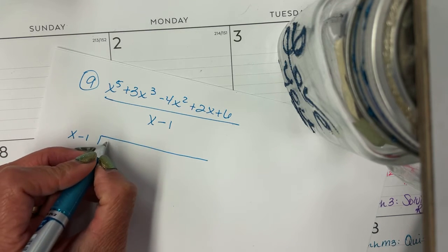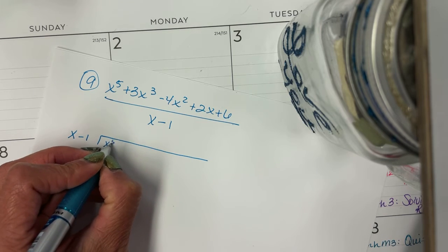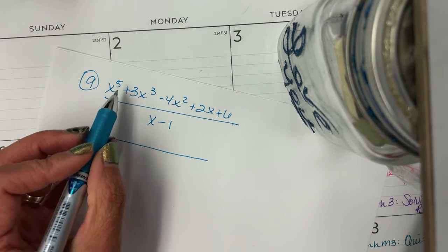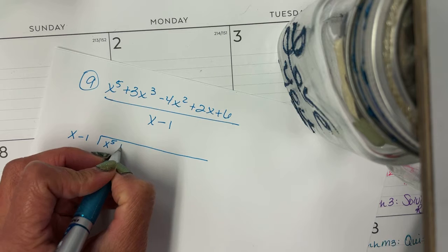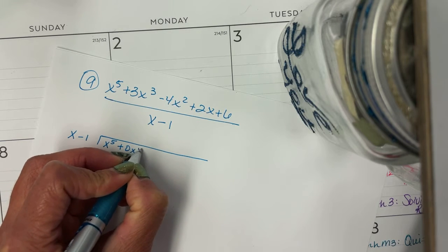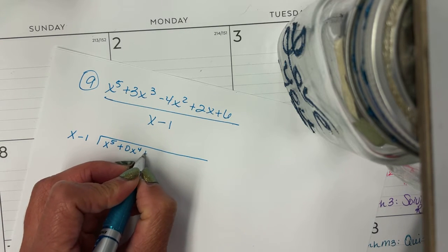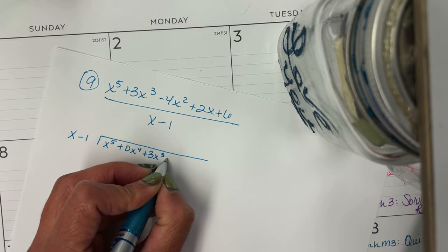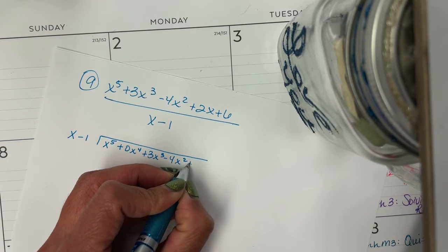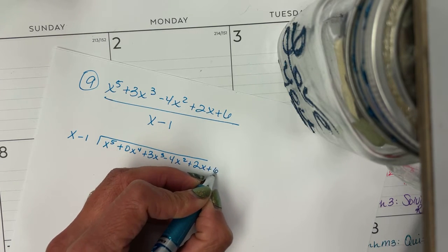So you always put your divisor outside and your dividend on the inside. It's x to the fifth. Notice I don't have an x to the fourth term, so I'm going to put a plus zero x to the fourth to hold its spot, plus 3x cubed minus 4x squared plus 2x plus 6.